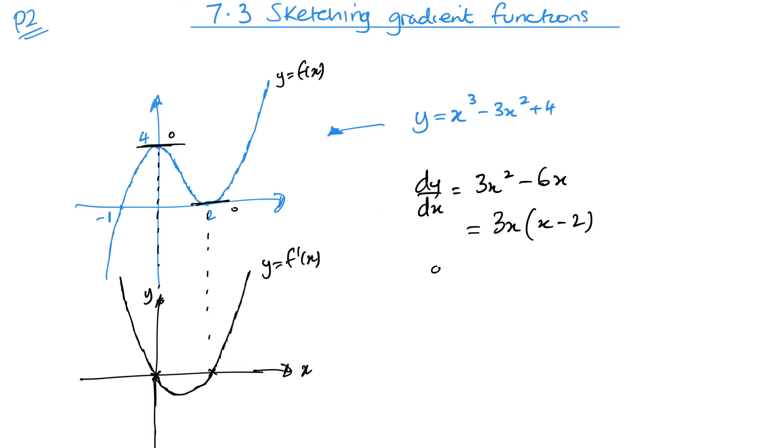So I can see when DY by DX here is 0, we can see that 3X equals 0 or X equals 0. X minus 2 equals 0 or X equals 2. So I can actually see these are my turning points from my original graph, my minimum and maximum. And they are the roots of this one for my differential.